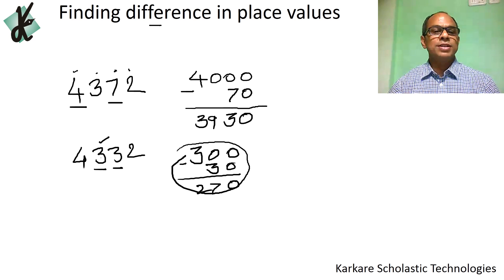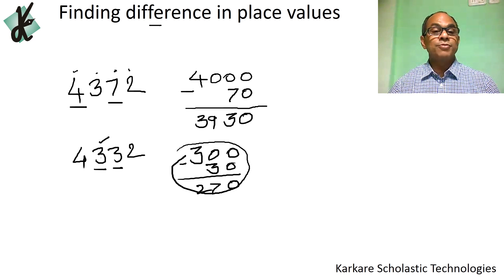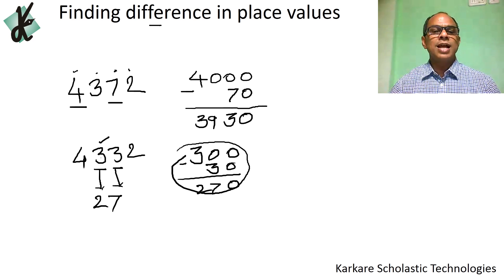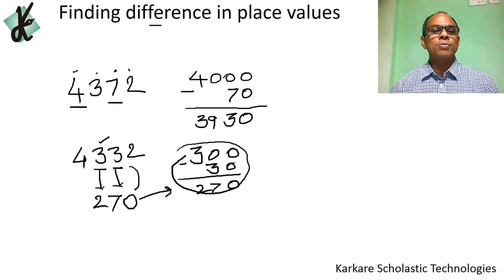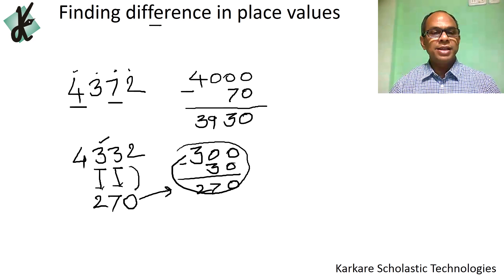Instead of doing all that work, there is a simple shortcut: if the digits are the same, the difference is always a multiple of 9. So 9 × 3 = 27, and then put a 0 after the digit, giving 270. The difference is always a multiple of 9.